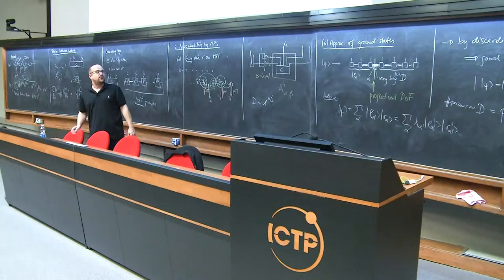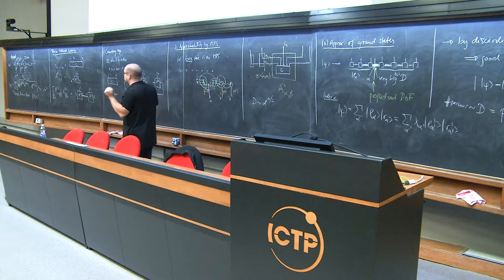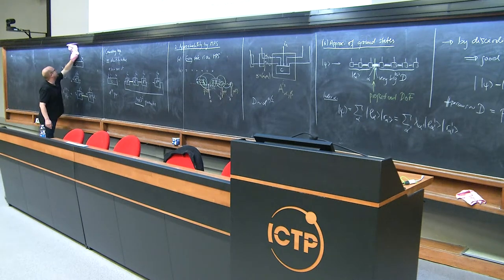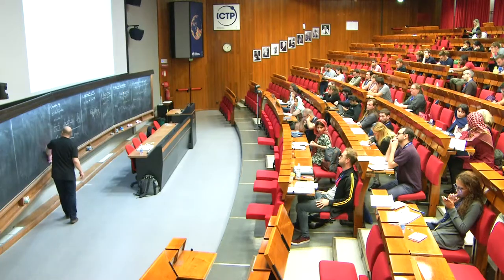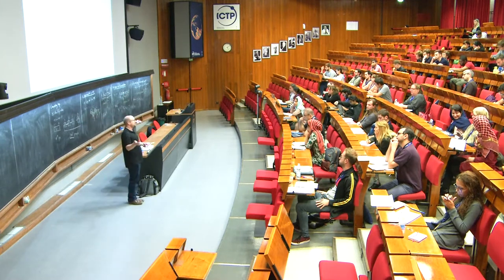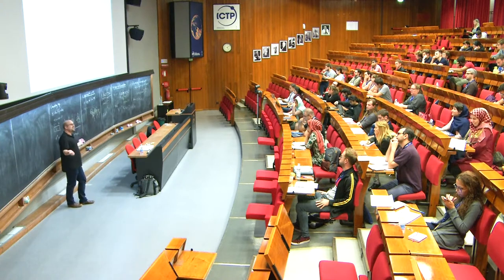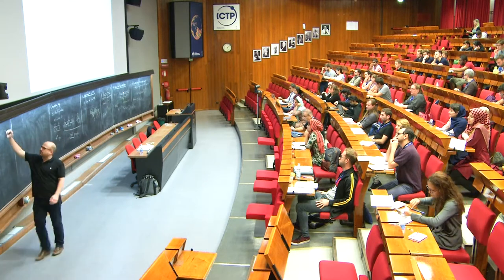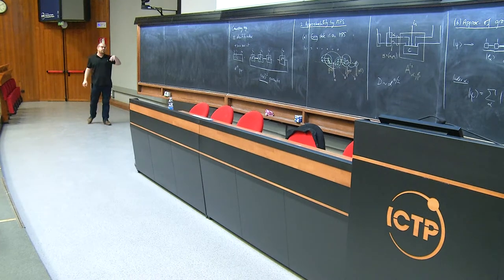We have an efficient description of states with an area law — ground states of local Hamiltonians — in the MPS framework. But that's not enough. If we want to simulate these systems, we need to efficiently evaluate physical quantities like energy and correlation functions, not just have an efficient state description. After all, the Hamiltonian itself is an efficient description, but extracting useful information from it is extremely hard.